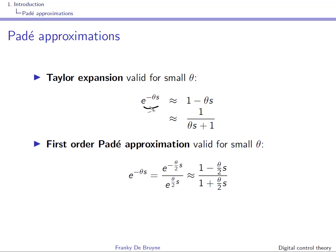In discrete time, assuming that tau equals k times the sampling period, this e to the minus theta S will transform into Z to the minus k. So in discrete time, it will be quite easy to handle the delay for control design because it can be handled as a rational transfer function.